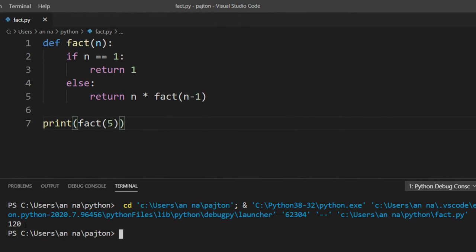And as you can see here we got the result 120 which is the result of finding factorial of number 5.